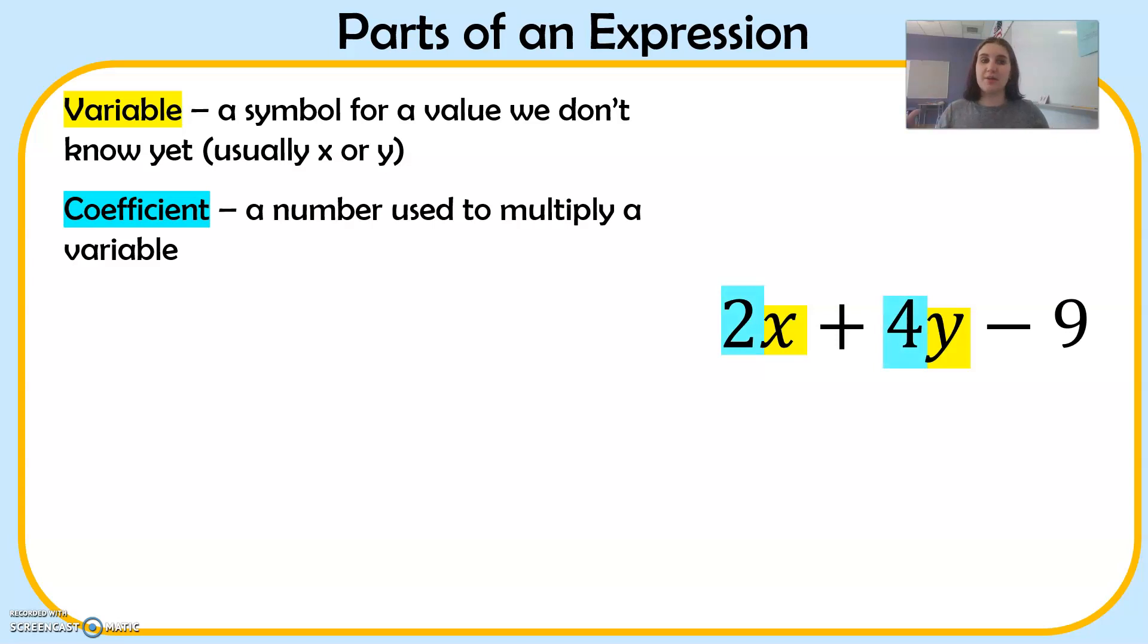So the coefficients are the numbers that are in front of variables, and those are multiplied together. So this 2x really means 2 times x. But it's kind of confusing to have that multiplication symbol and that x together. So we just write it as 2x, and that means they are multiplied.